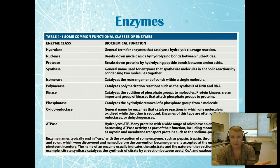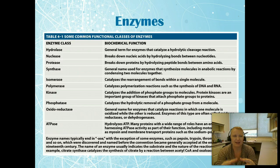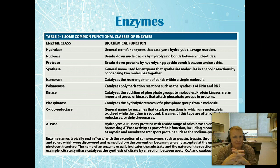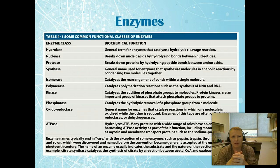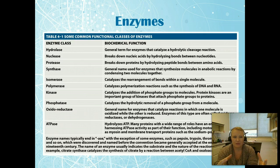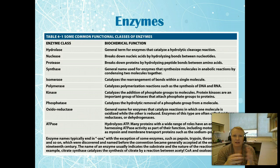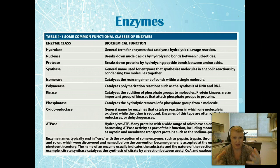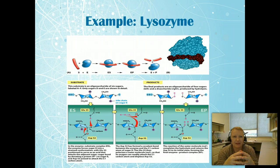Enzymes are another key example of protein function. The key to recognizing enzymes by name is that they always end in '-ase.' As you can see on this chart, there are a whole bunch of -ases. Enzymes are usually named closely to their function — for example, protease breaks down proteins, while nuclease breaks down nucleic acids. Being familiar with this nomenclature helps you infer an enzyme's function even if you've never heard of it.